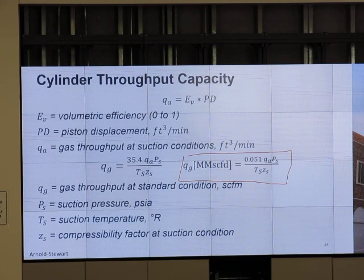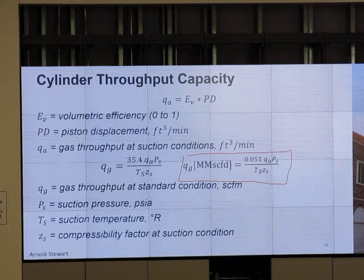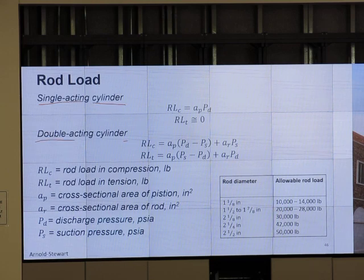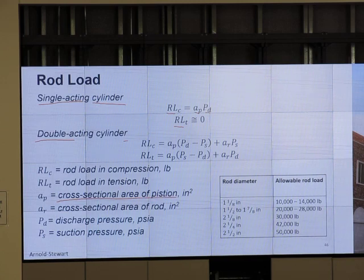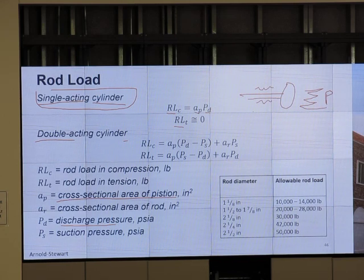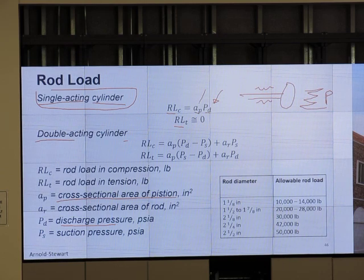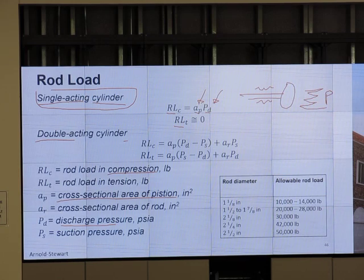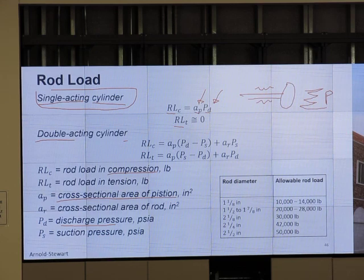Rod load. Now let's talk about rod load. Here's the equation for rod load. Single acting cylinder, double acting cylinder. We have RL sub C, RL sub T, AP, PD. AP is cross sectional area of the piston. PD is discharge pressure. This is single acting. In single acting we compress against, so this side is pressurized gas but this side is nothing. So the rod load has to have pressure multiplied by this side pressure multiplied by area.